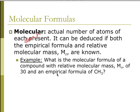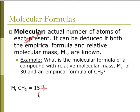It can be deduced if both the empirical formula and a relative molecular mass are known. If I have a relative molecular mass — which really just means molar mass — of 30 grams per mole, and it has an empirical formula of CH3, I know that the relative molecular mass of that empirical formula is 15 grams per mole from the periodic table.